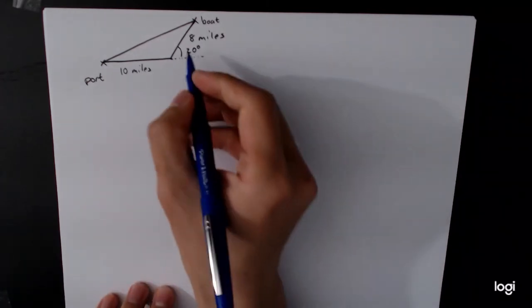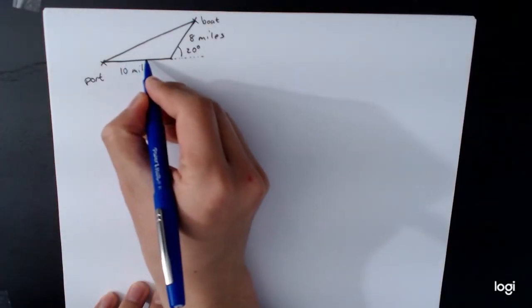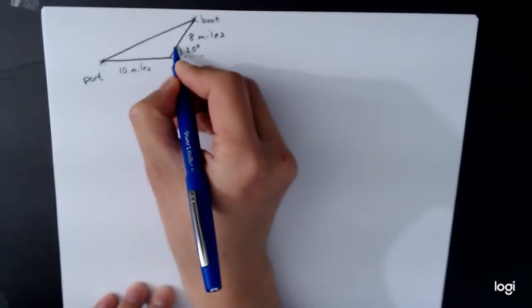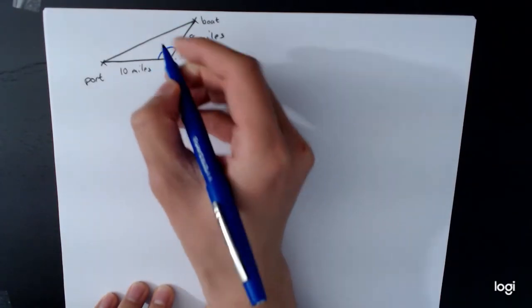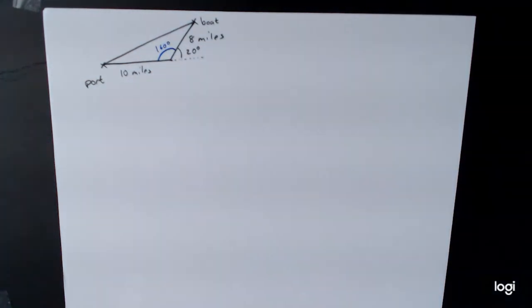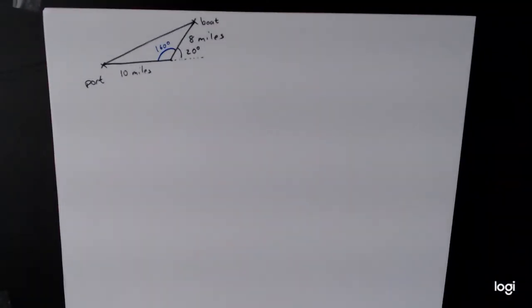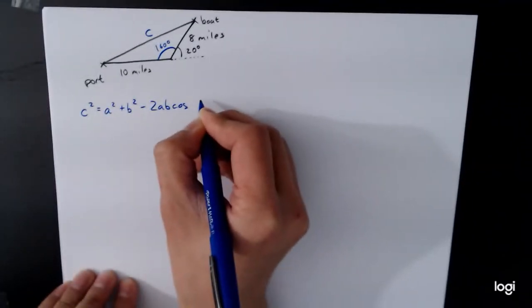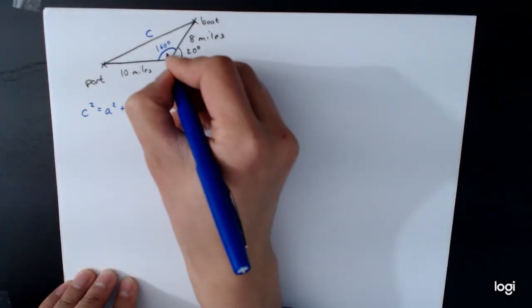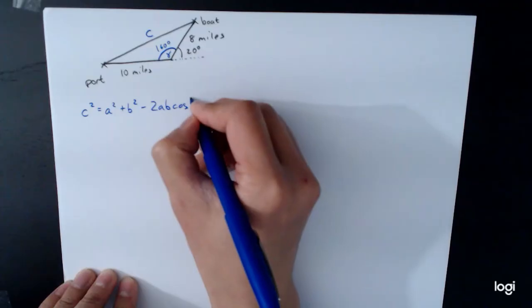Alright, so what does this mean? So if this angle is 20 degrees and this is a straight line, what does it tell us about this angle? Well, the sum of these two angles is going to be 180 degrees. And so that means this angle is 160 degrees. And now we have enough information to start setting things up. If we are interested in this distance, I'll call that distance c. So c is opposite the 160 degree angle. So c squared is equal to a squared plus b squared minus 2ab cosine gamma.